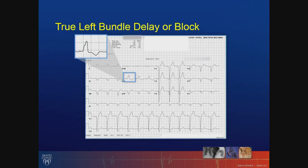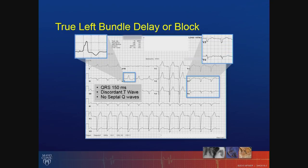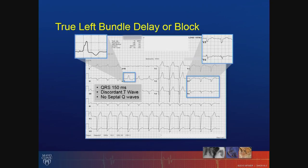When you have a true left bundle branch block, the septum is activated from right to left. Therefore, you won't see any negative tiny Q waves in lead 1 and AVL, and you tend to have discordant T waves. The wider the QRS, the more likely it is a true left bundle branch block. You also see signs of fractionated or delayed activation in the lateral precordial leads. The first peak is the activation of the right ventricle and the second peak is the activation of the left ventricle. In summary, a wide QRS more than 120 milliseconds which is negative in lead V1, discordant T waves, and fractionation in the lateral precordial leads help you recognize the true left bundle branch block on an ECG.